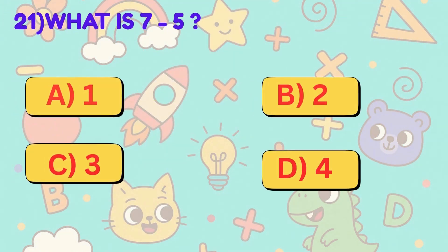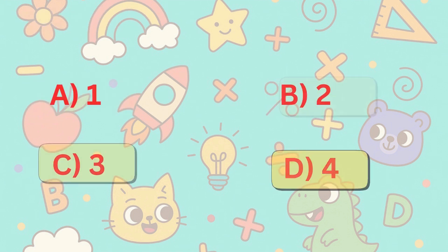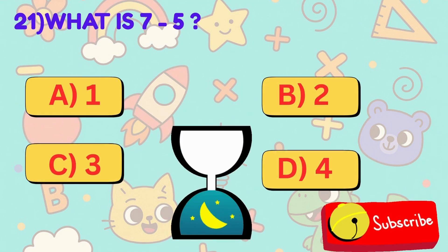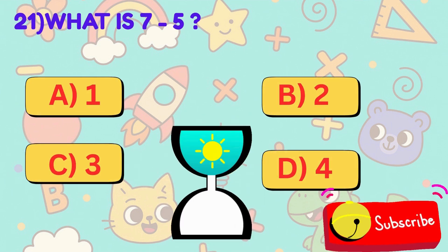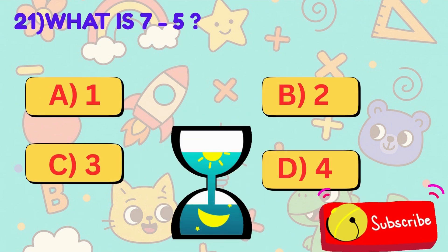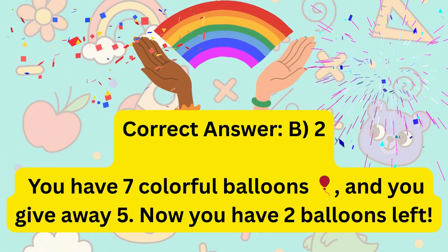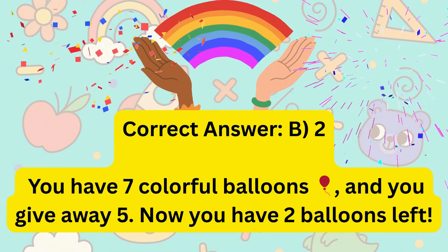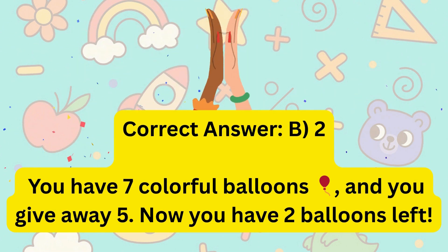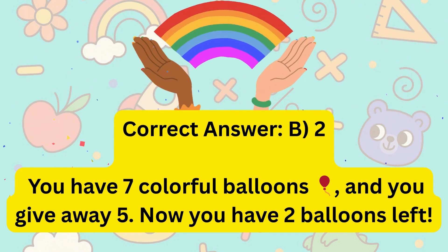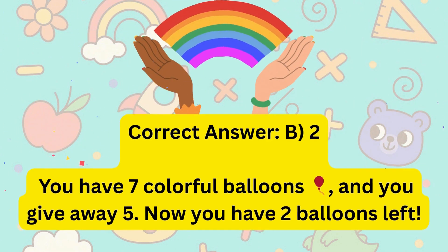21. What is 7 minus 5? Is it A, 1, B, 2, C, 3, or D, 4? Correct answer is B, 2. You have 7 colorful balloons and you give away 5. Now you have 2 balloons left.